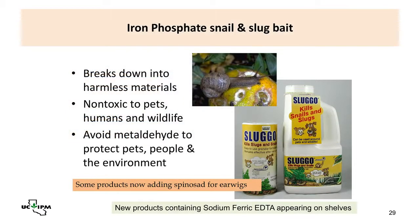For snail and slug control, iron phosphate bait (such as Sluggo) is the recommended choice if you use bait. Snails and slugs really need an integrated pest management program — baits alone generally will not satisfactorily control them. You need a combination of habitat modification, trapping, and selecting plants that snails and slugs don't prefer.